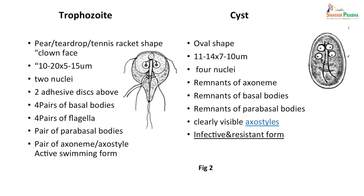The trophozoite has 2 adhesive discs for attaching to intestinal cells, 4 pairs of basal bodies, and 4 pairs of flagella, along with a pair of axonemes, making it the active swimming and motile form. The cyst has no flagella, only remnants of the axoneme and parabasal bodies. The cyst is the infective and resistant form by which infection is carried from one host to another.